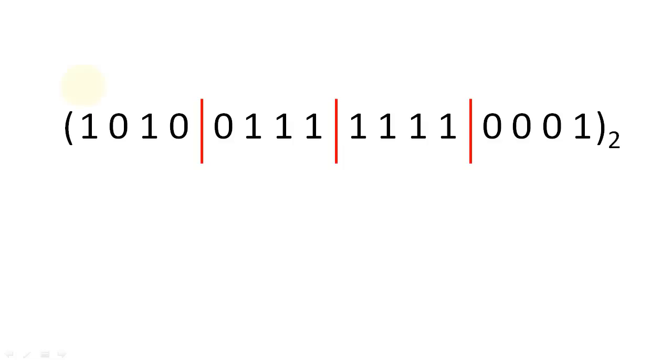The first 4 bits will become 8 plus 2, or 10. The next 4 bits will become 4 plus 2 plus 1, or 7. The next 4 bits are 8 plus 7, or 15. And the last 4 bits are 1.